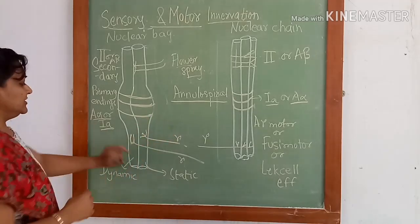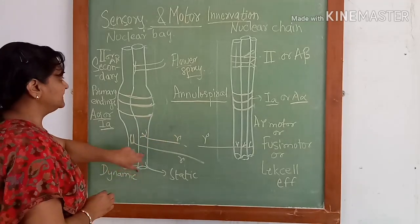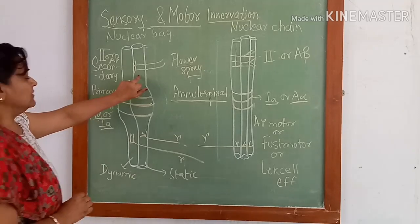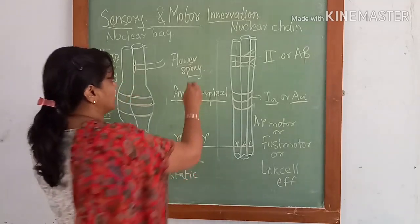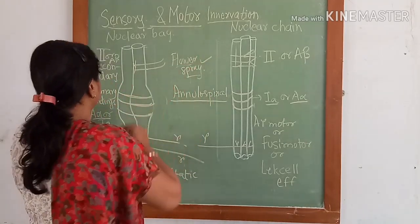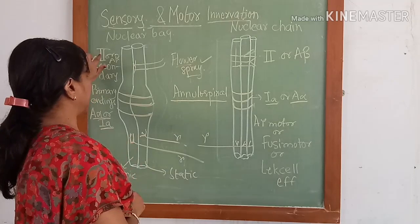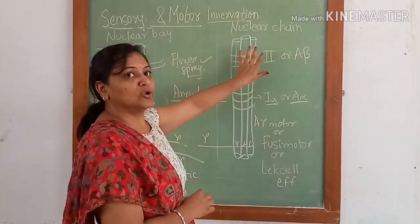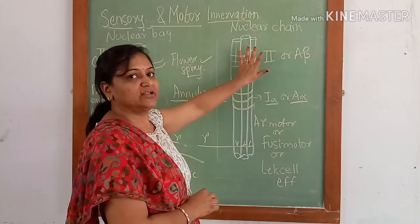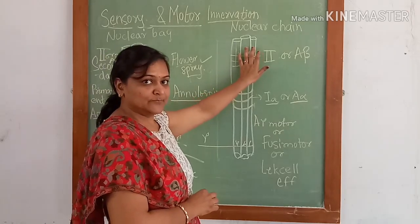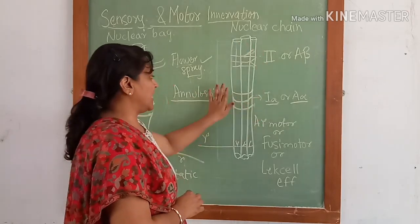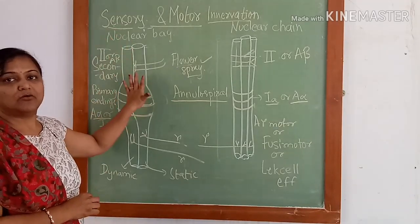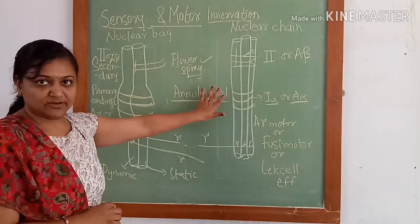The static nuclear bag fibers also contain secondary innervation known as flower spray endings, which is type 2 or A-beta type. This type of innervation is also present in the nuclear chain fibers. This covers the overall primary and secondary sensory innervation of the intrafusal fibers.